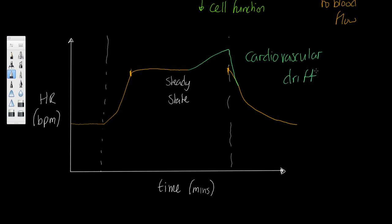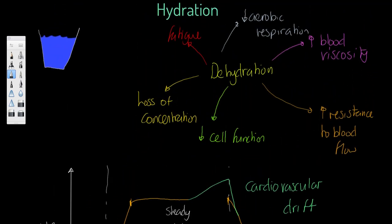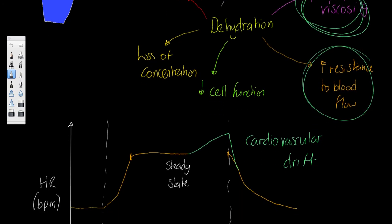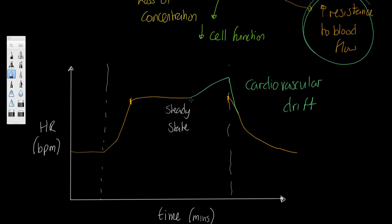Now, why is that? And if we go back to what we wrote a few moments ago, the reason that's happening is because dehydration causes an increase in blood viscosity. We get an increase in resistance to blood flow. Now, because of that, what's happening here is that effectively our stroke volume is decreasing. And in order to maintain the same amount of blood flow to the muscle, heart rate has to increase. And that's what we call cardiovascular drift.